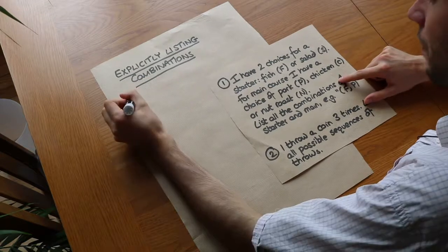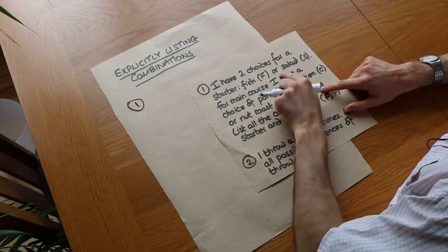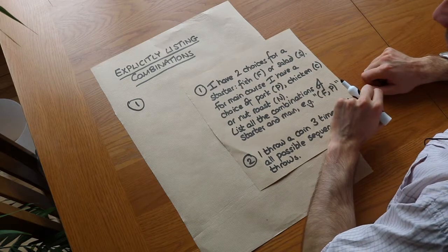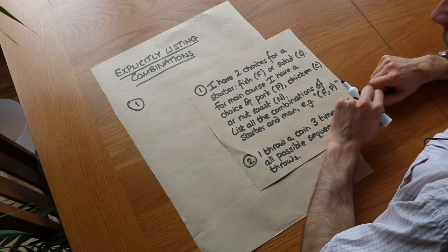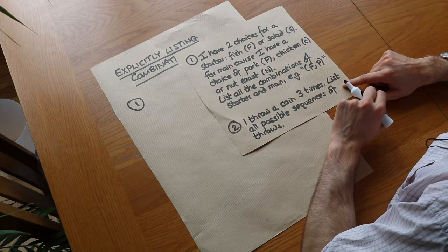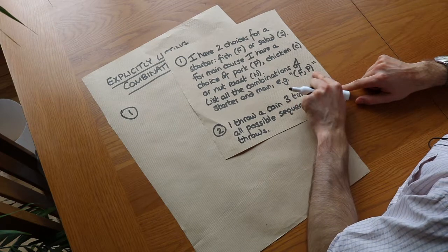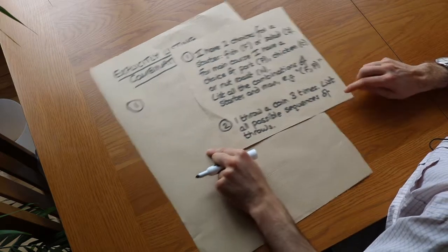So let's take this example here. I have two choices for a starter, fish represented by F or salad. For main course I have a choice of pork, chicken, or nut roast. List all the combinations of starter and main course. For example, F and P would mean that you have fish for starter and pork for main course.